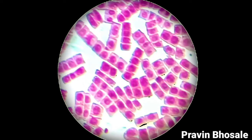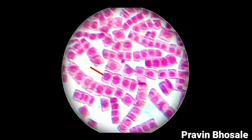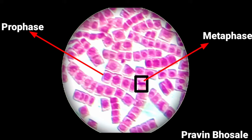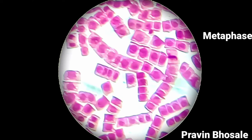Now let's see the stages. This is prophase, and here you can see metaphase. In metaphase, the chromosomes are arranged at the equatorial region — the chromosomes are in the center of the cell. So this is metaphase.